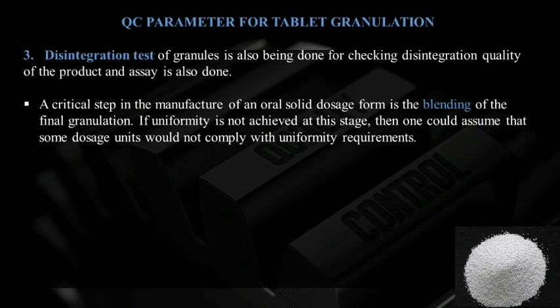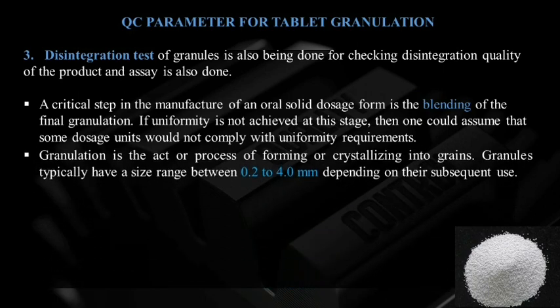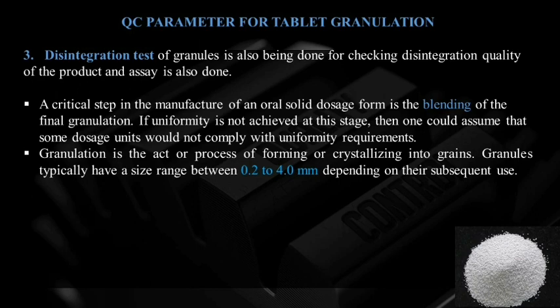Disintegration test of the granules is also done for checking the disintegration quality of the product, and assay is also done. A critical step in manufacture of solid dosage forms is blending of the final granulation. If uniformity is not achieved at this stage, then one could assume that some dosage units will not comply with the uniformity requirements. Sampling is done after blending of the final granulation and assay is also done to ensure content uniformity. Sampling is important at every step in manufacturing.